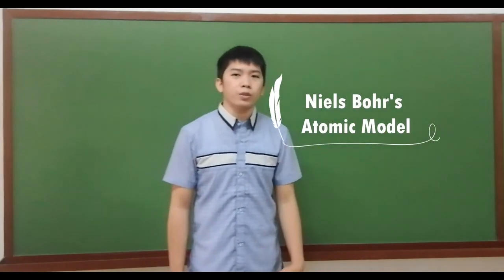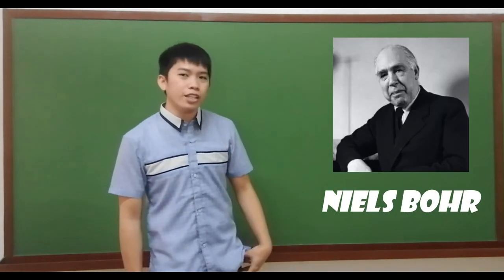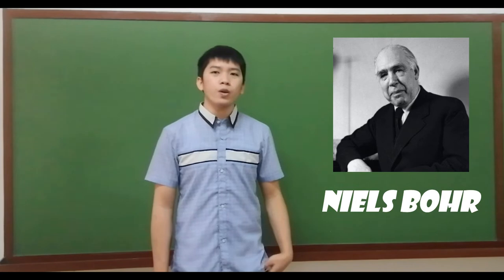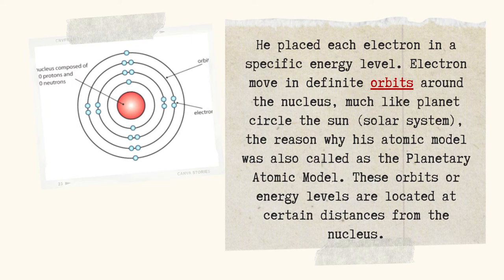Let us now talk about Niels Bohr's atomic model. Niels Bohr is a Danish scientist who proposed an improvement of the atomic model. He placed each electron in a specific energy level. Electrons move in definite orbits around the nucleus, much like planets circle the sun in the solar system. The reason why his atomic model was also called as the planetary atomic model. These orbits or energy levels are located at certain distances from the nucleus.